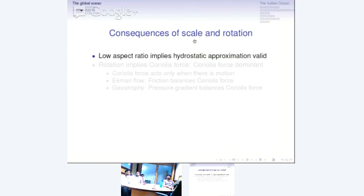What are the basic consequences of scale and rotation? One thing is that we have a low aspect ratio — a very small depth scale in comparison to the horizontal scale. If I take a parcel of water — a parcel in fluid mechanics is defined as an entity small enough for us to be able to define properties like pressure or density.